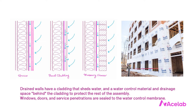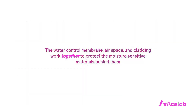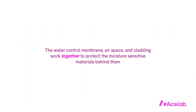This water management strategy permits us to build out of lightweight, moisture-sensitive materials. The water control membrane, airspace, and cladding work together to protect the moisture-sensitive materials behind them. The water control membrane protects the most moisture-sensitive components of the wall: sheathing, framing, insulation, and drywall.